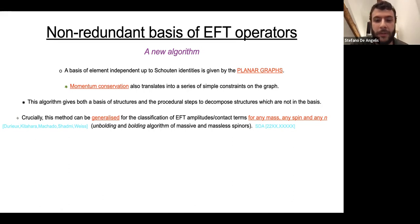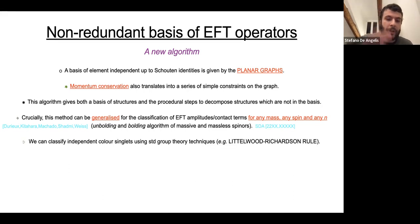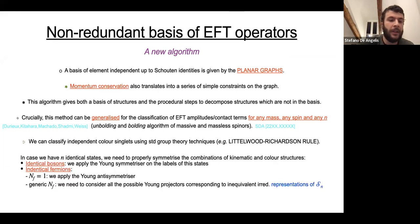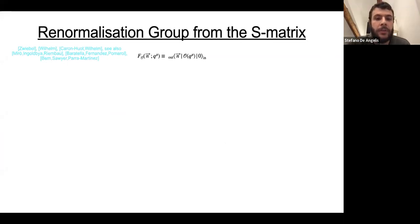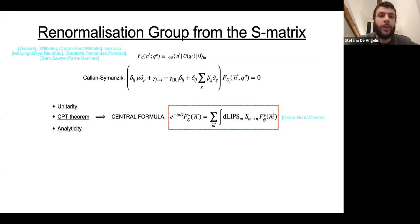What is crucial about this is the fact that this method, plus some ideas I've taken from a paper by Durieux, Kitahara, Machado, Shadmi, and Weiss, allows for a classification of EFT contact terms for any mass, any spin, and any number of legs. This is the topic of the project I mentioned before that I'm writing up. Hopefully it will be out next month, but probably at the beginning of February. Now we classified all the kinematic structures. We need just to classify color singlets, and we did that just by standard group theory techniques. Then we have to take into account identical particles. If they are identical bosons, we need to apply Young symmetrizers. If they are identical fermions with no flavor, we need to apply Young anti-symmetrizers. If we have flavor, we need to consider all possible Young projectors corresponding to inequivalent irreducible representations of S_n, where n is the number of identical particles.